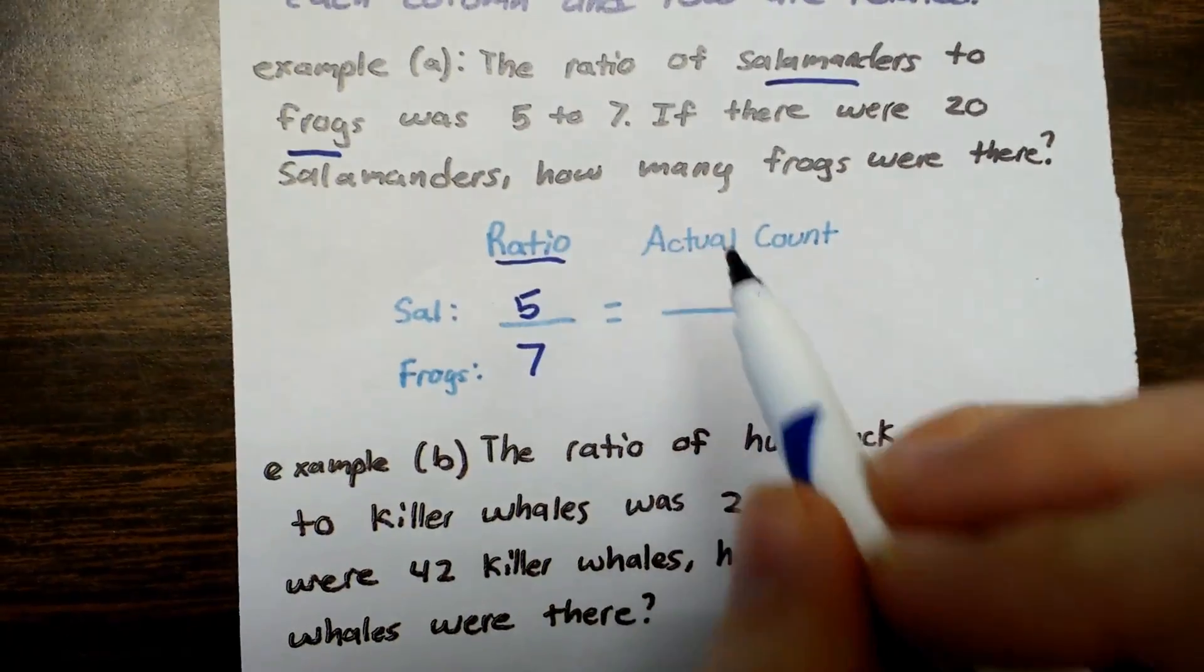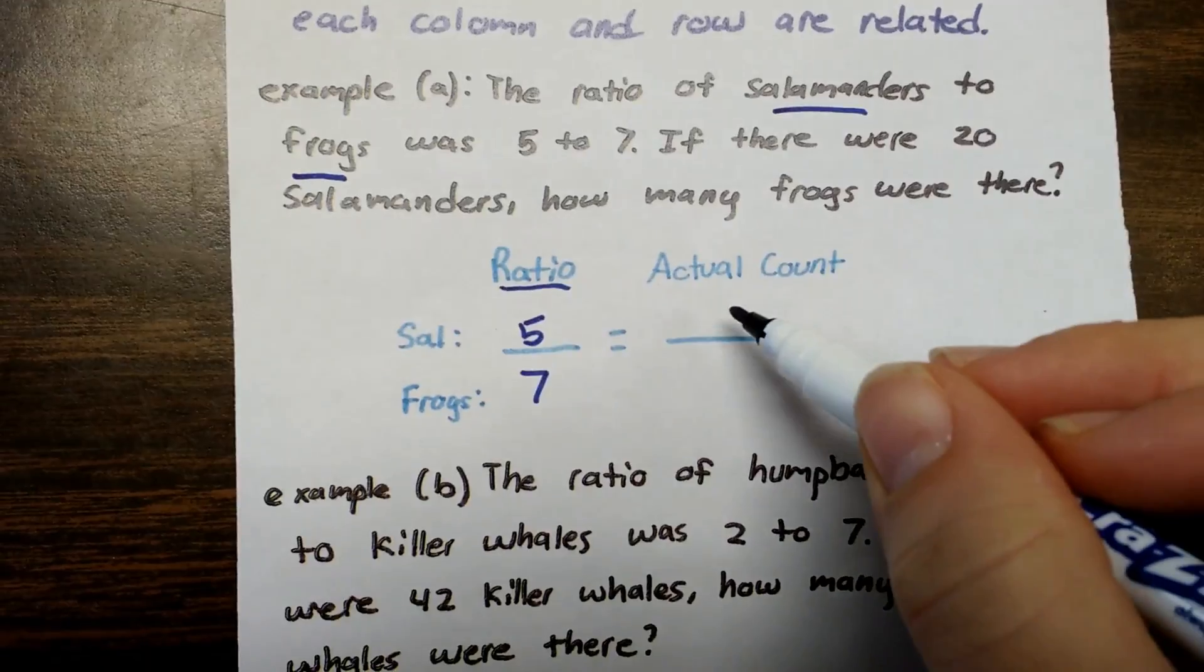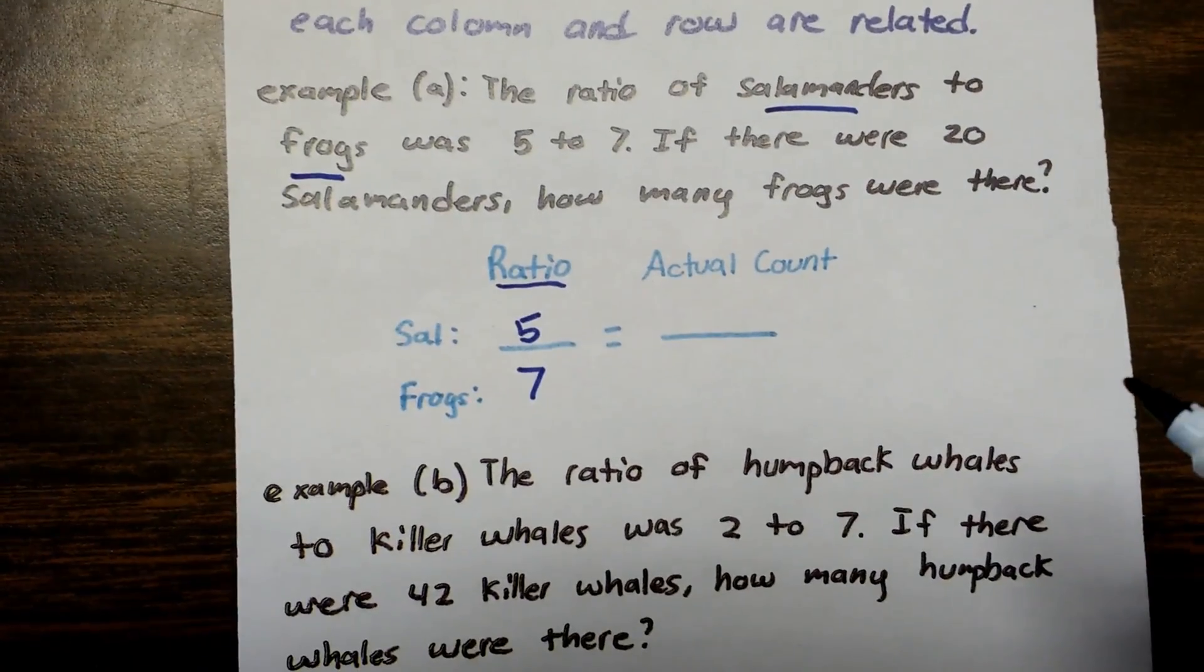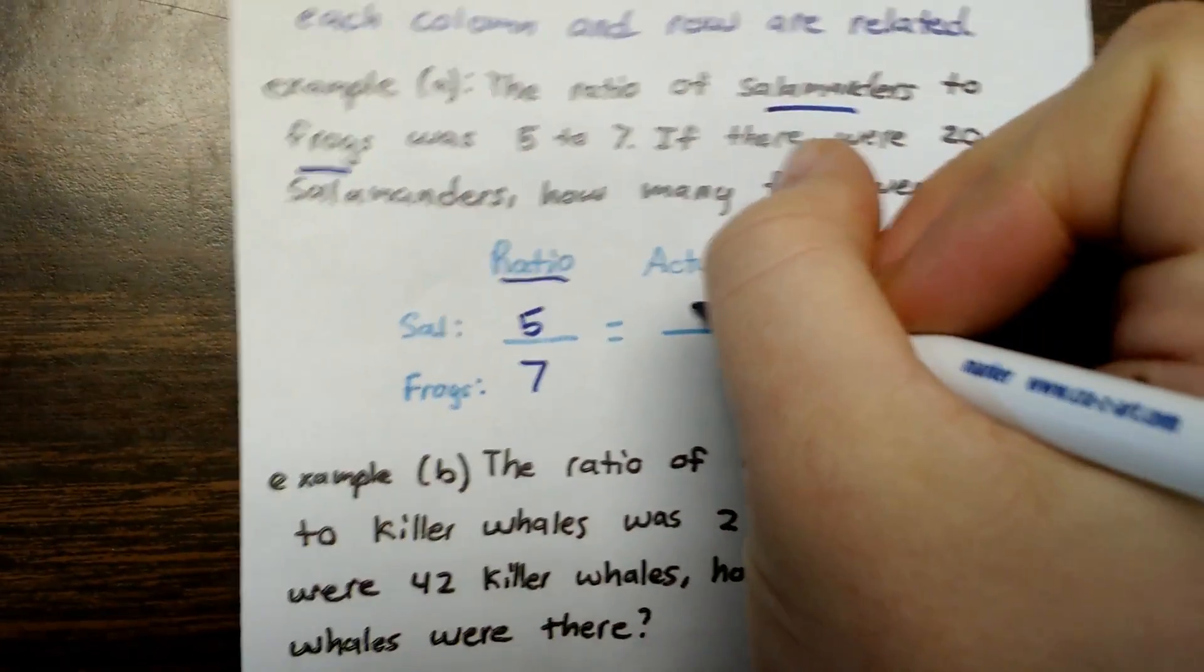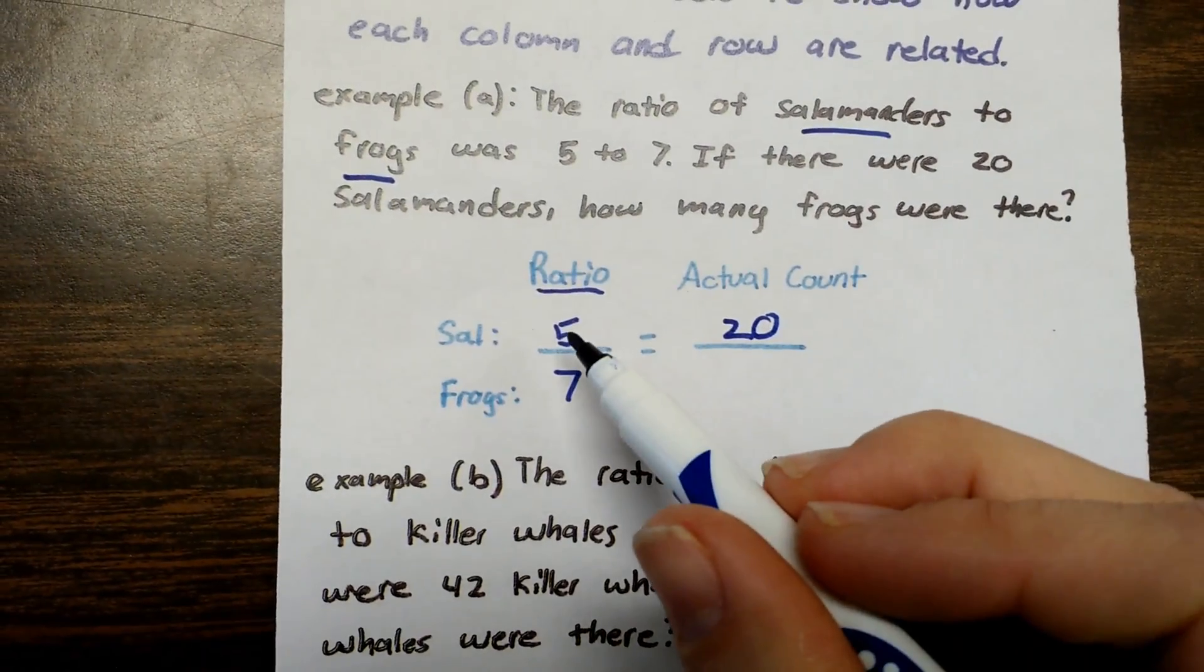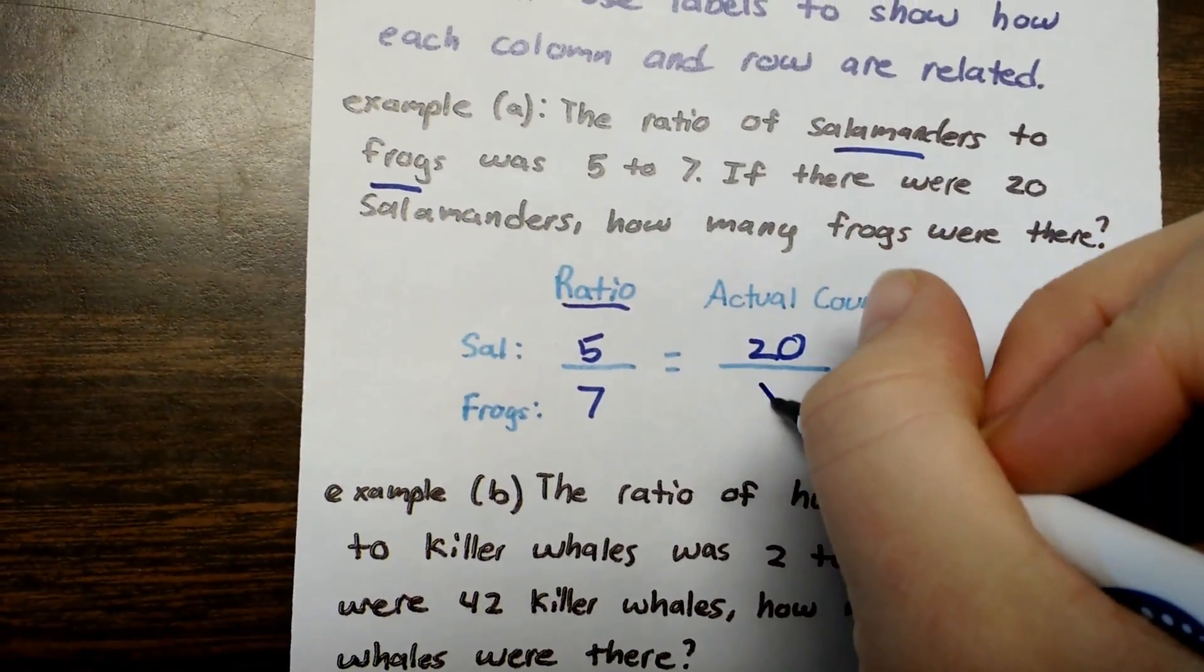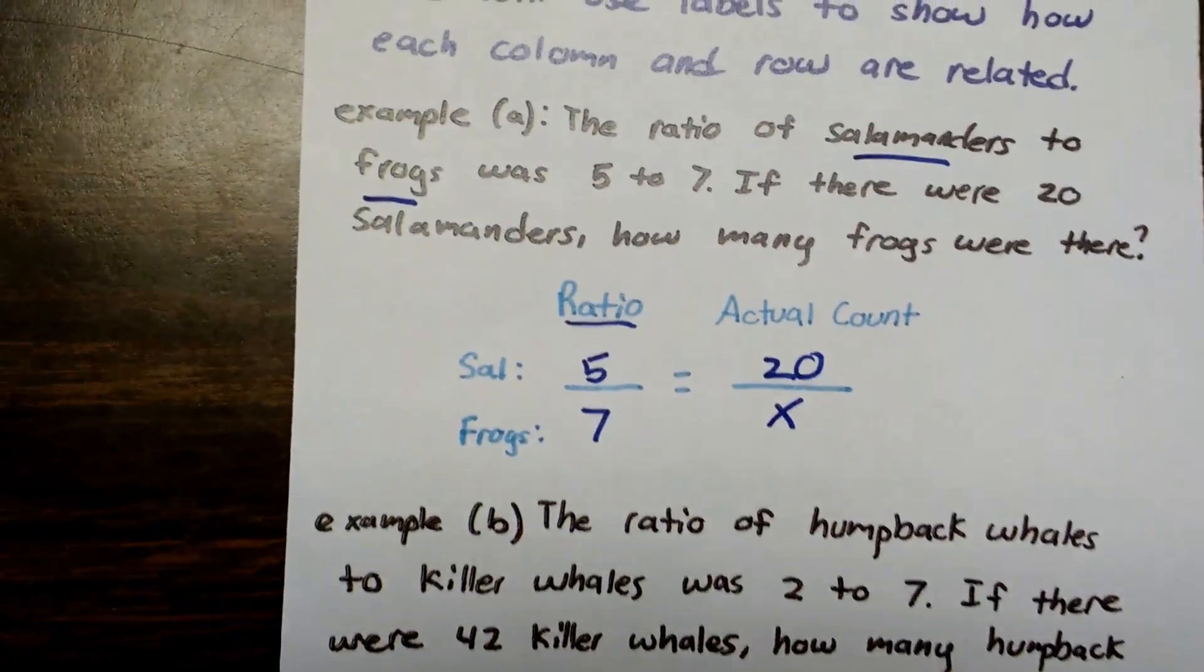If there were 20 salamanders, so 20 is that third number I have, is it going to go on the top or the bottom? Right, it's going to go on the top because that's talking about salamanders. So it's related to this 5. And now this is what I don't know is how many frogs there were.